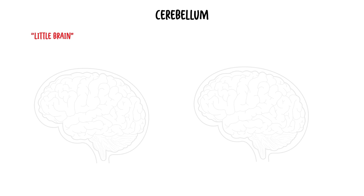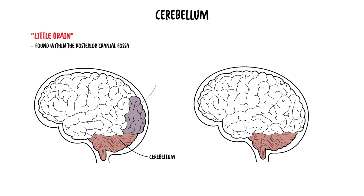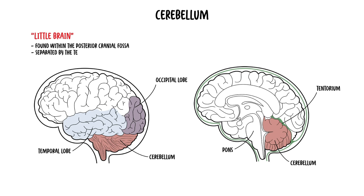The cerebellum is found at the back of the brain, within the posterior cranial fossa, inferior to the occipital and temporal lobes. It is separated from these lobes by a tough layer of dura mater called the tentorium cerebelli.